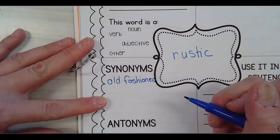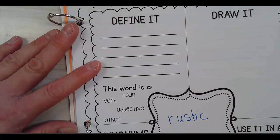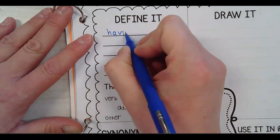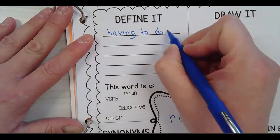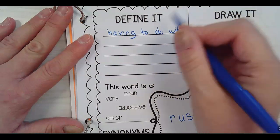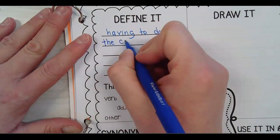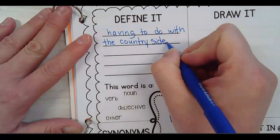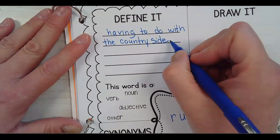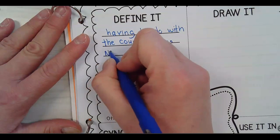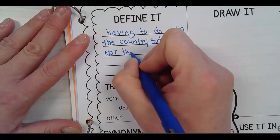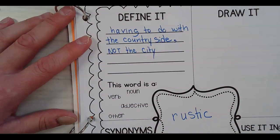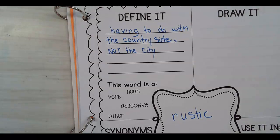So rustic might mean log cabin. And rustic means having to do with the countryside, not the city. So, like, my friend in her house got some old barn wood and put it up on one of her walls, which is rustic.